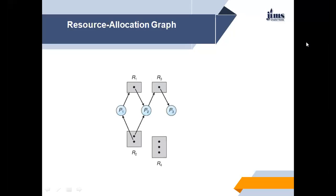This resource allocation graph has: one instance of resource type R1, two instances of resource type R2, one instance of resource type R3, and three instances of resource type R4. As stated, process P1 is holding an instance of resource type R2 and is waiting for an instance of resource type R1.